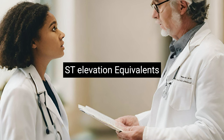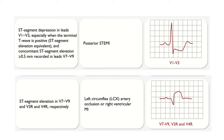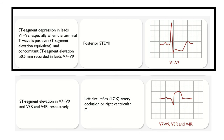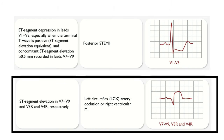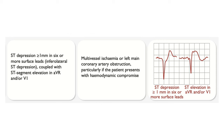ST elevation equivalents include ST depression in V1–V3 especially when the terminal T wave is positive, or ST elevation in V7–V9, both highly suggestive of posterior MI or left circumflex coronary occlusion. ST elevation in V3R and V4R is suggestive of right ventricular infarction. ST elevation in aVR and/or V1 coupled with ST depression ≥1 mm in six or more surface leads is highly suggestive of multi-vessel ischemia or left main coronary disease, particularly with hemodynamic compromise.